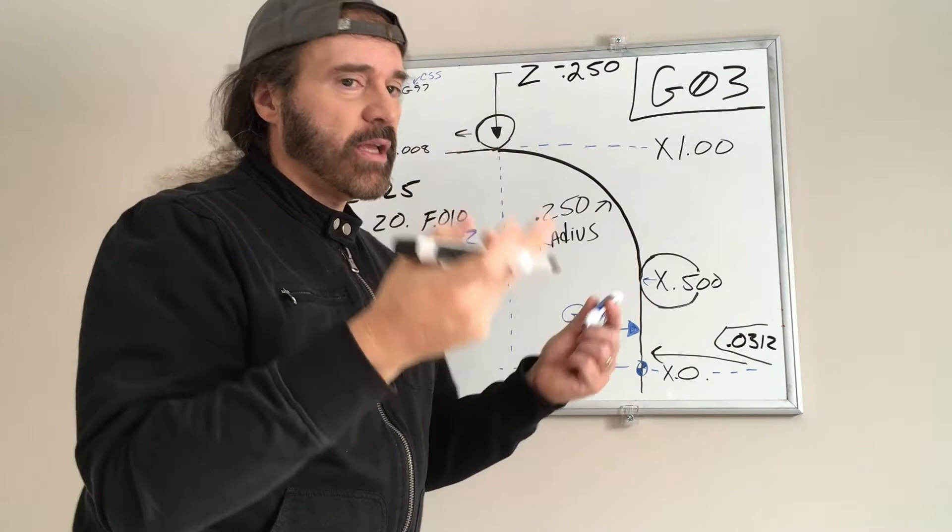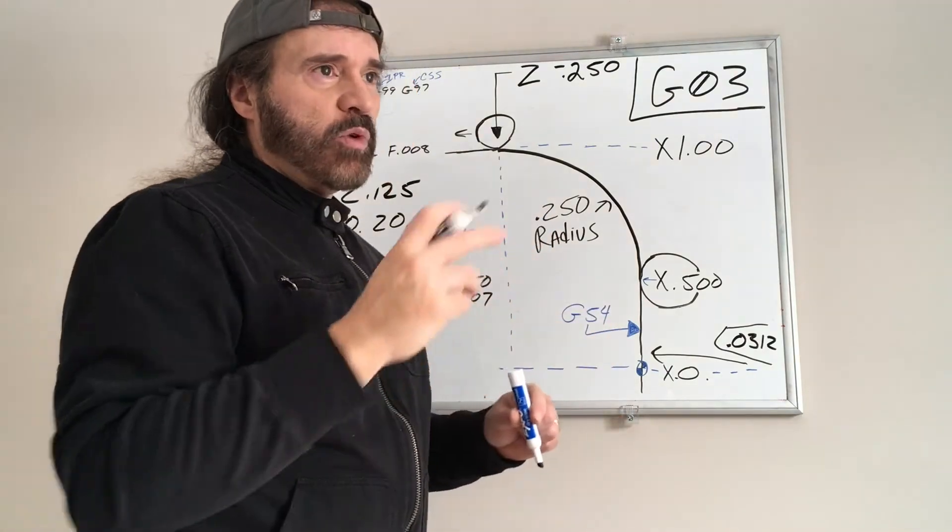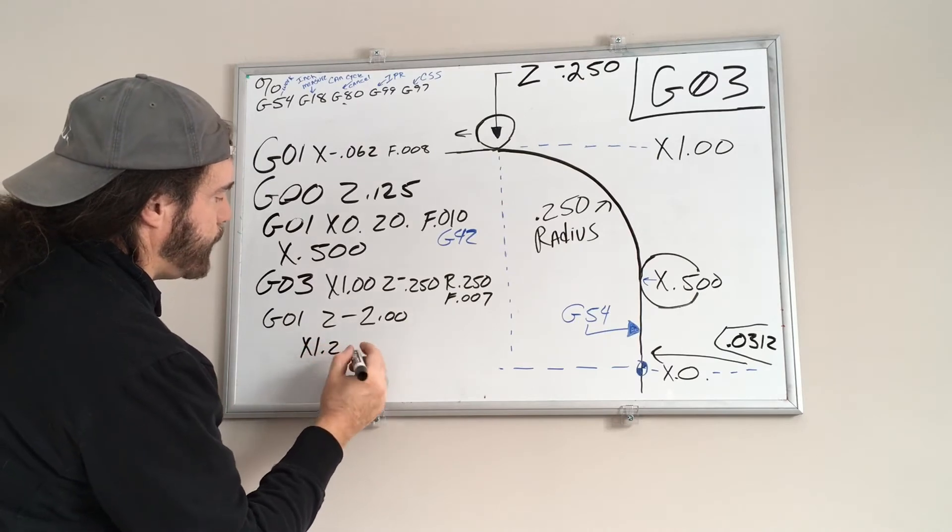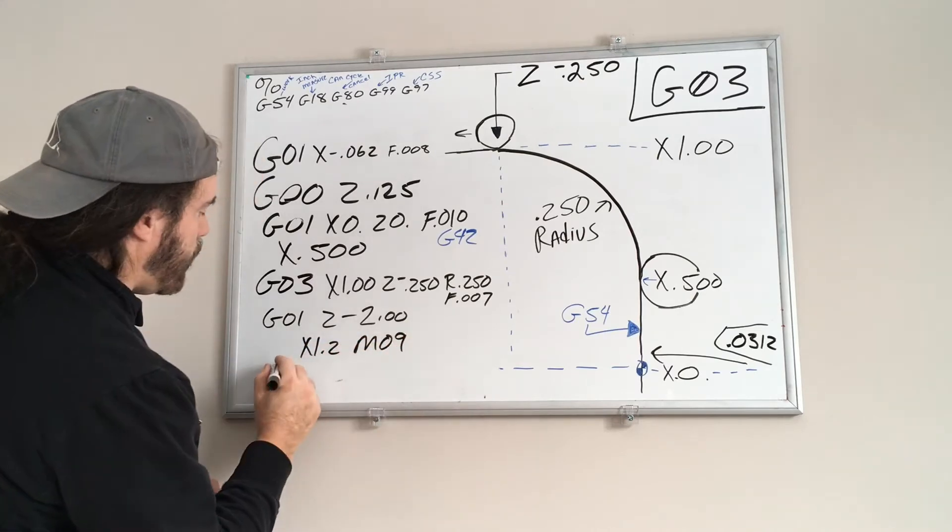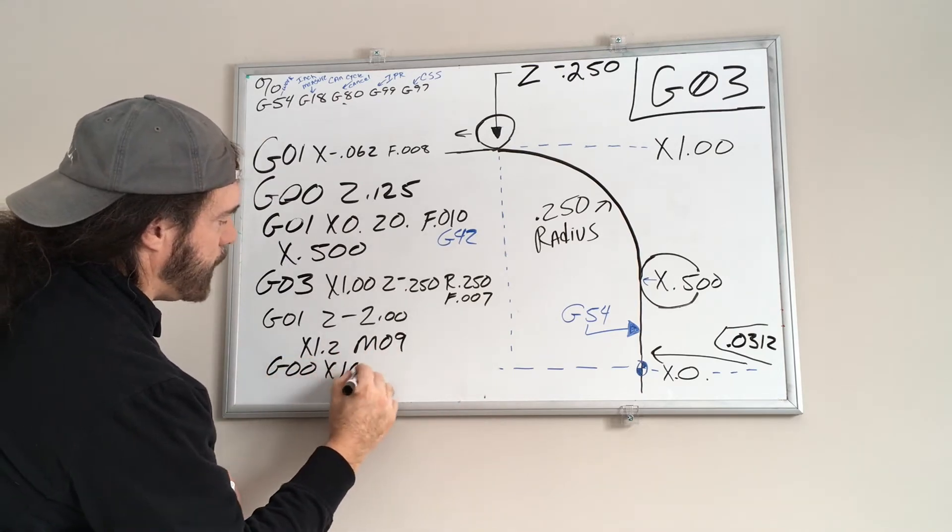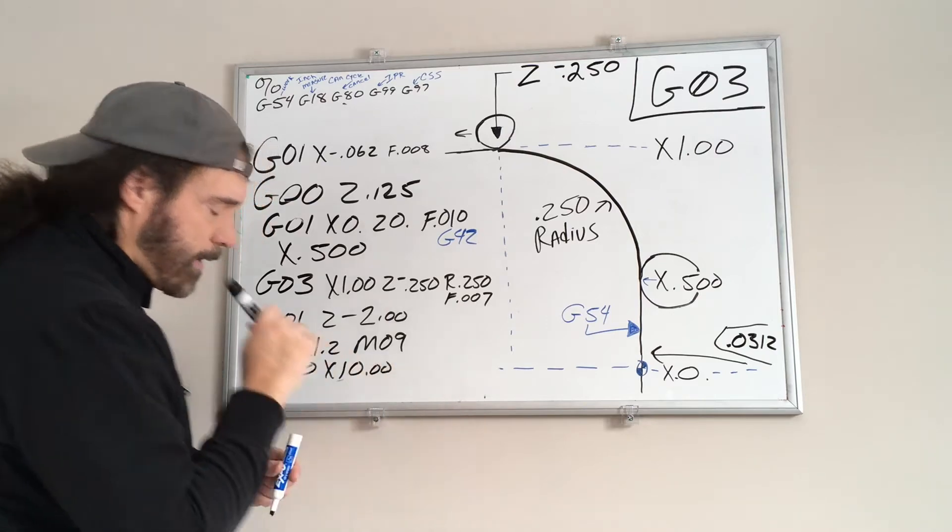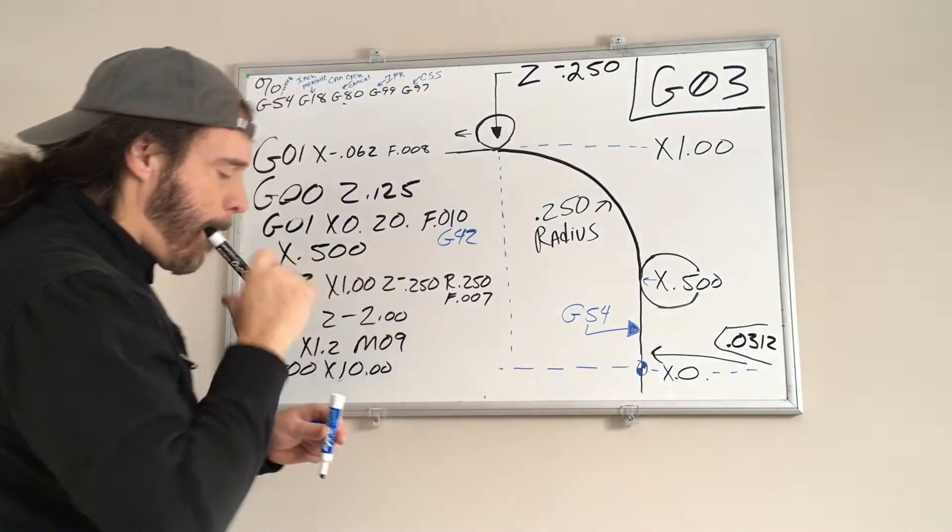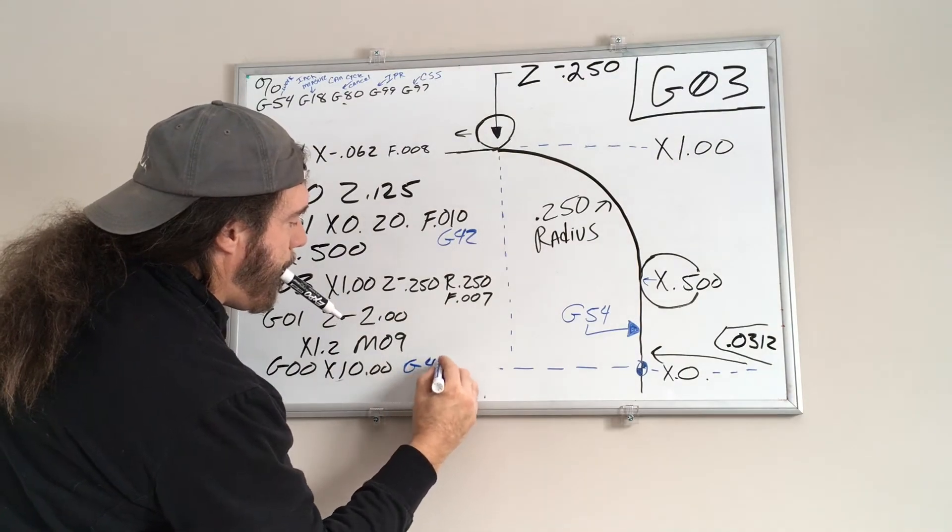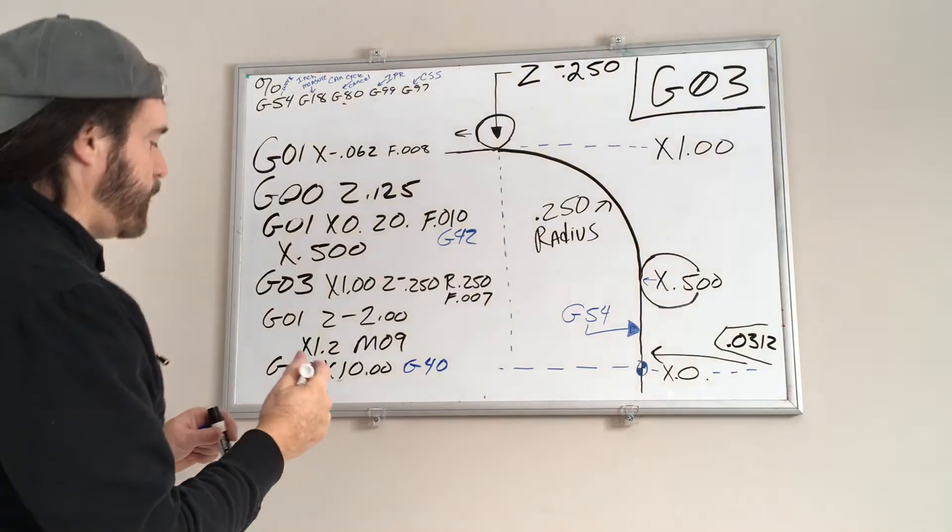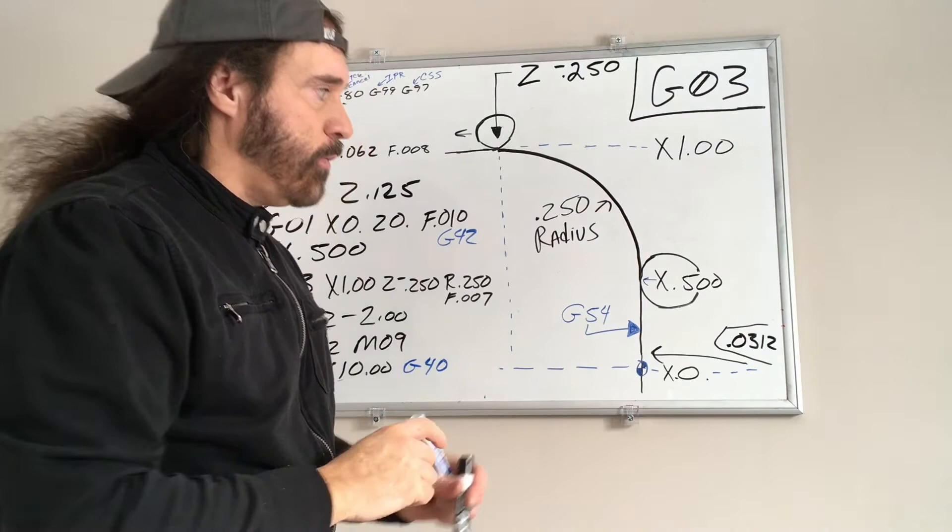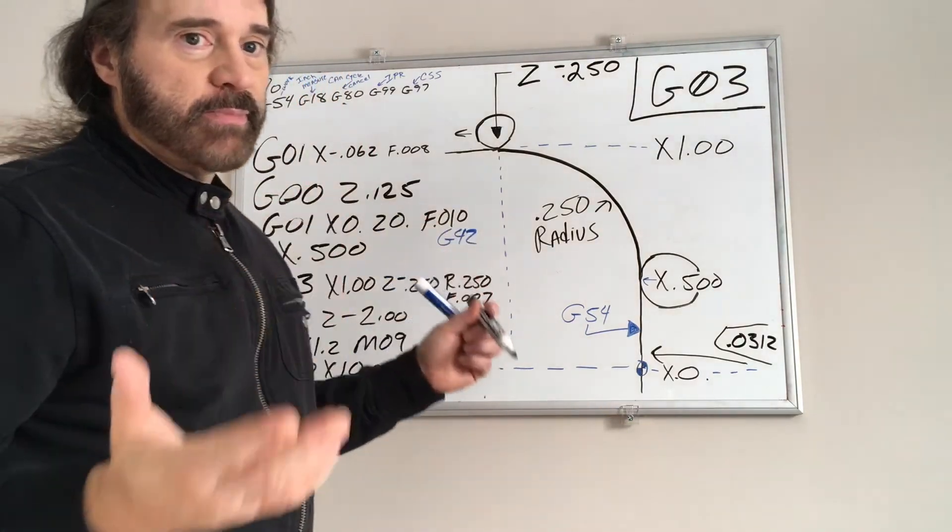Say the part is an inch and an eighth, so 1.125 in diameter. Let's go up to X 1.2, turn the coolant off. We'll rapid, we'll go X 10.0 and we'll cancel cutter comp, which is G40. And then from there it is rapid home. So that's all there is to it when you're using cutter comp in this scenario.